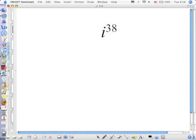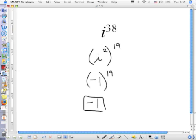i to the 38 power is an even power so all my i's are going to be gone. But how many i squareds are in 38? 19. And since i² represents negative 1, I am raising negative 1 to the 19th power. Well, what do you get when you multiply a negative number an odd number of times? Negative. A negative.